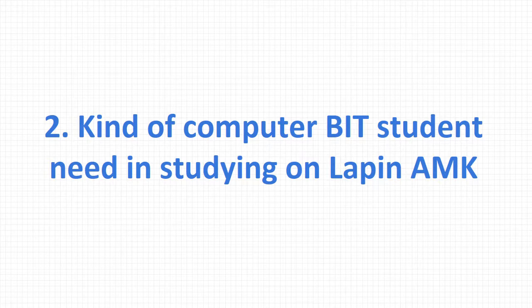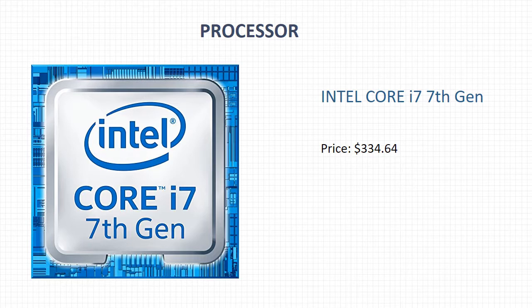Here is the second part of the presentation: the kind of computer a BIT student needs for studying. The first component is the processor. I chose the Intel Core i7 7th Generation. The seventh generation is the latest version of Intel Core. It will bring incredible speed, performance, and graphics to your PC, and its price is $335.